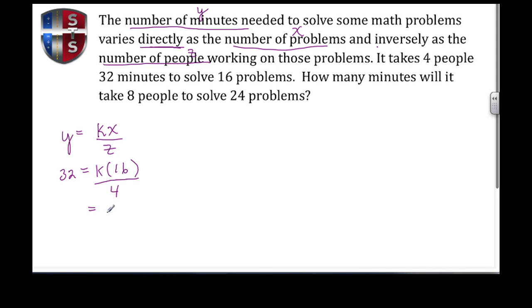Now we solve for k. 16 divided by 4 is 4, so I have 4k. I bring down my 32, and to isolate k I divide both sides by 4, so 8 equals k. I have my constant of variation.